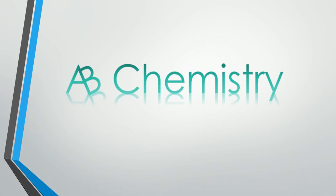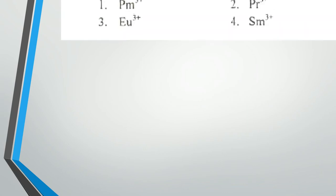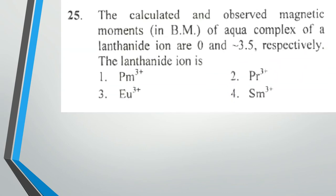Hi, welcome to AB Chemistry. Today we'll be looking at a question asked in the 2017 June Part B exam, question 25 of Part B in booklet A. The calculated and observed magnetic moments in Bohr Magneton of aqua complex of a lanthanide ion are 0 and approximately 3.5 respectively.